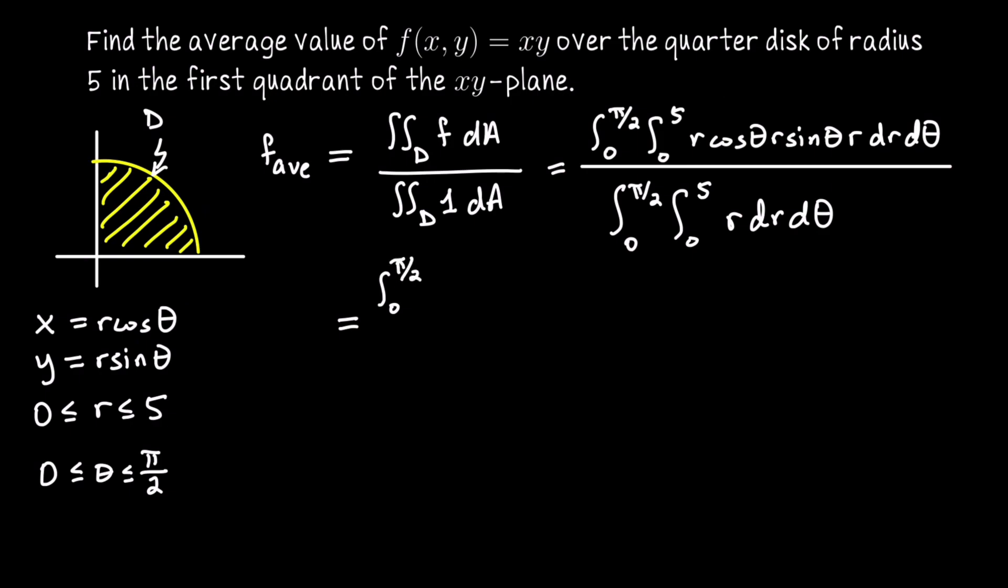I'm going to write this as the product of two single dimensional integrals, one with respect to theta. So I'll say 0 to pi over 2 cosine theta sine theta d theta, and then one with respect to r, so 0 to 5 r cubed dr. You can split it up like that whenever your bounds are constant and the integrand can be factored into a function of one variable times a function of the other.